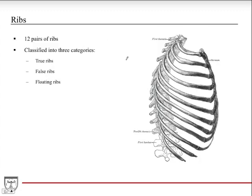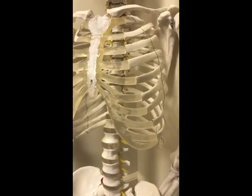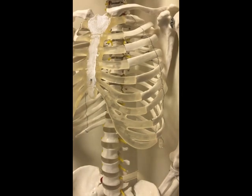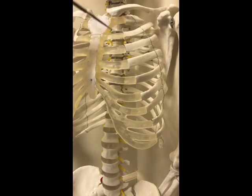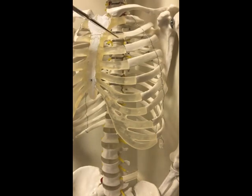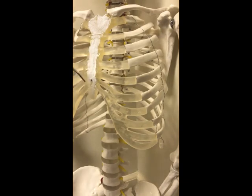For the ribs, there are 12 pairs — 12 ribs on each side — classified into three categories: true ribs, false ribs, and floating ribs. Jumping to the skeletal model to show the different types in three dimensions: the true ribs are ribs one through seven, and they each have their own cartilaginous articular point with the sternum — they don't share an articulation point.